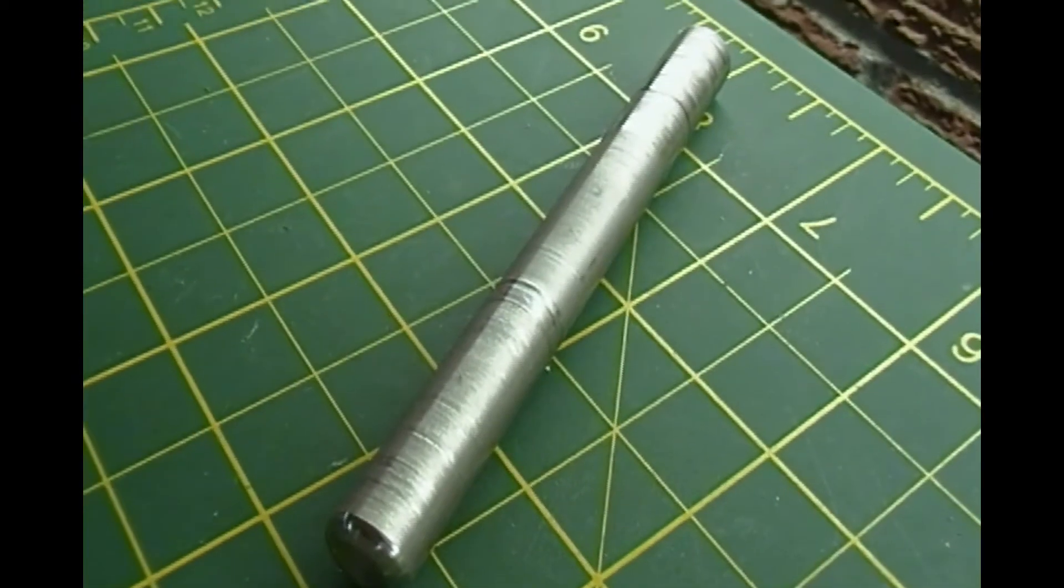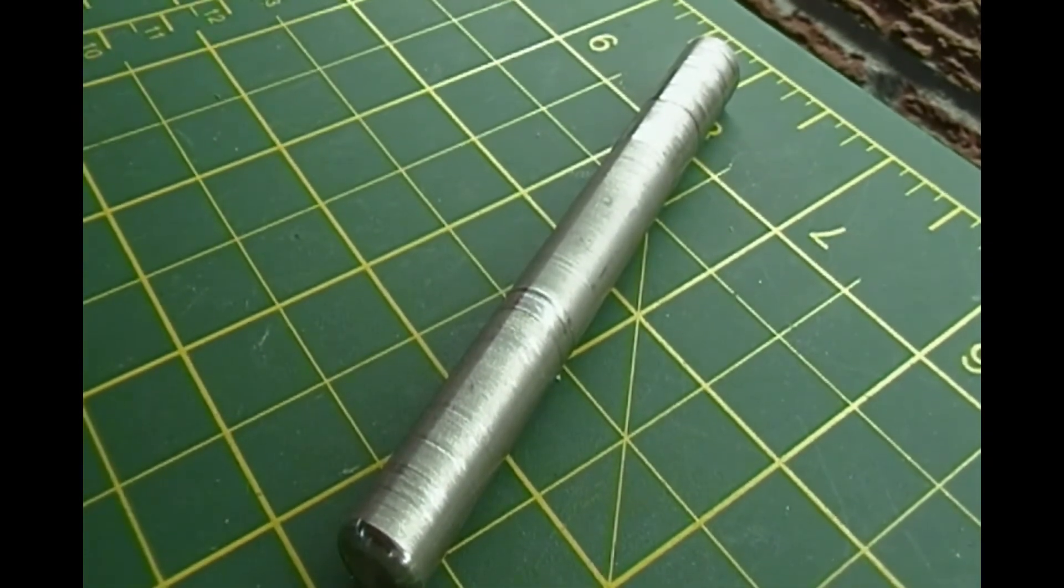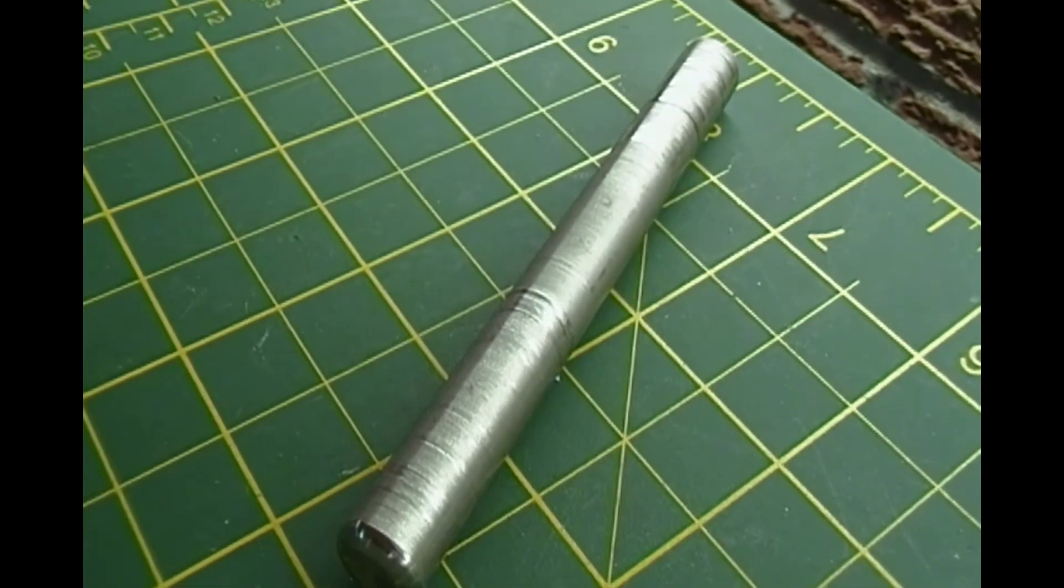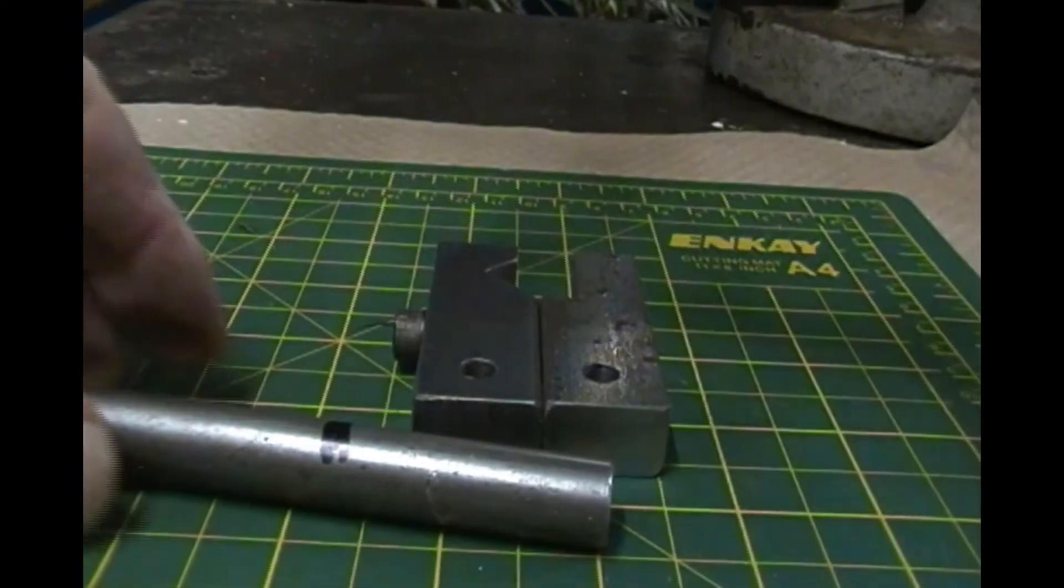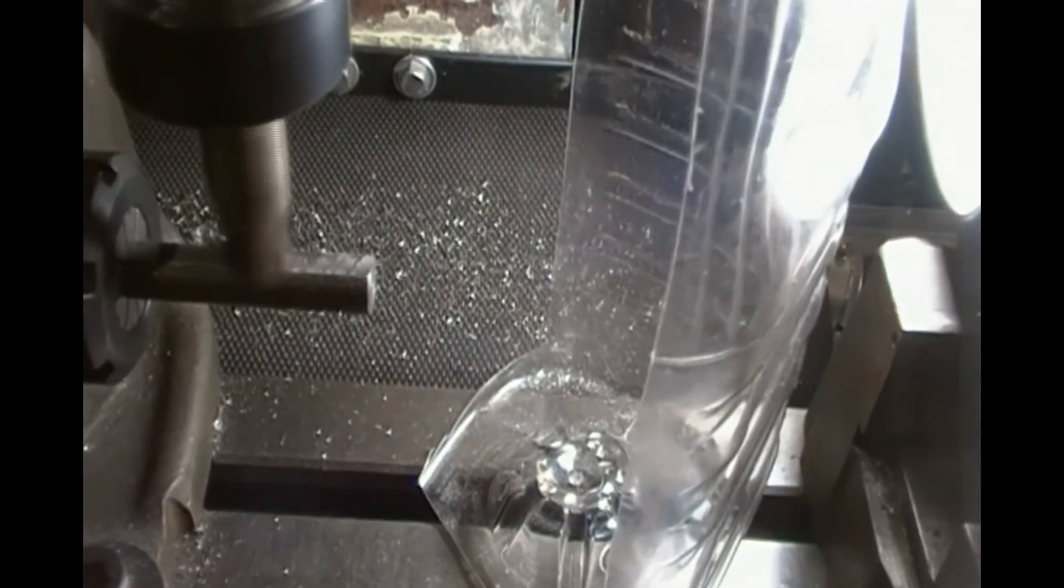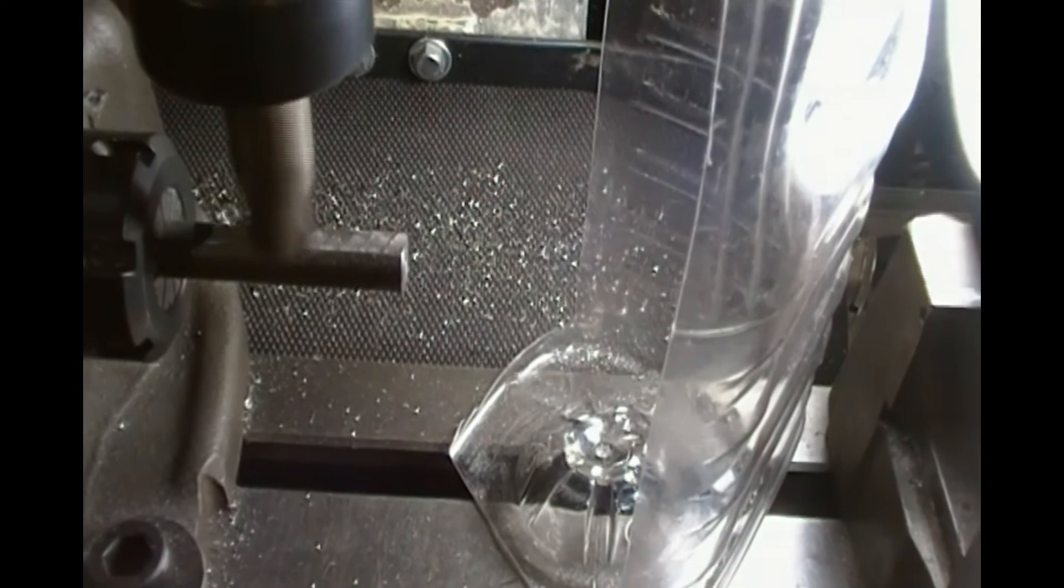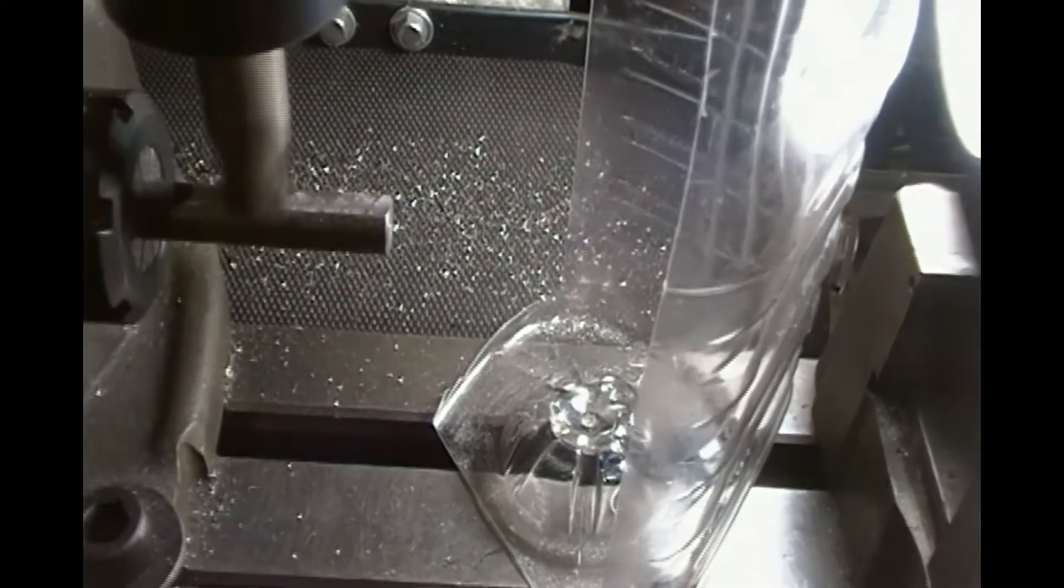I then cut two pieces of half inch, or 12 millimeter steel, round stock to length. I milled part of the round stock flat, then I drilled and tapped holes to fasten the round stock to the back of the clamp using 6-32 screws.